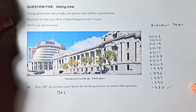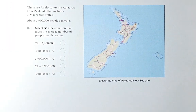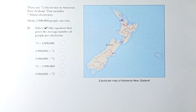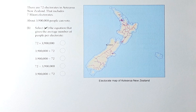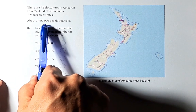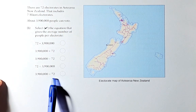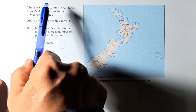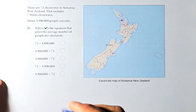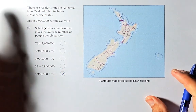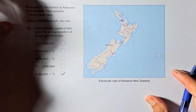This is a long way, but it's a valid proof. Question 5B sounds like this: there are 72 electorates in Aotearoa New Zealand, which includes the 7 Māori electorates. About 3.9 million people can vote. Select the equation that gives the average number of people per electorate. To get this answer, it's very simple: 3.9 million divided by 72, because the 7 Māori electorates are already included in the 72. So 3.9 million ÷ 72 gives you the answer for question 5B.